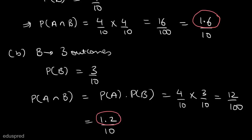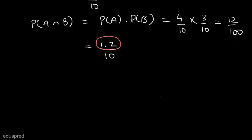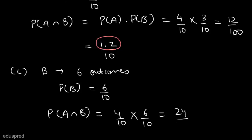Let's move to option C. In option C, B has 6 outcomes. The probability of B will be equal to 6 divided by 10, and the probability of A intersection B will be equal to 4/10 multiplied by 6/10, which equals 24 divided by 100, or 2.4 divided by 10. So option C is also not the answer.